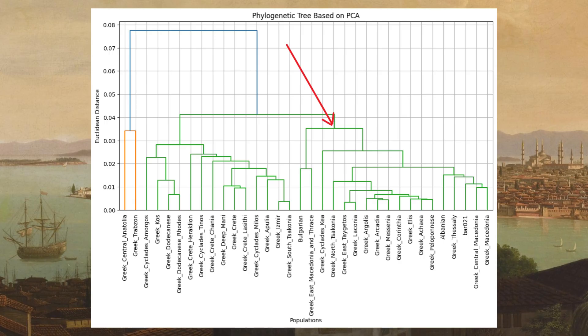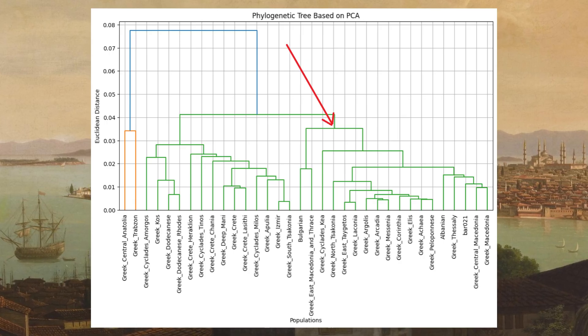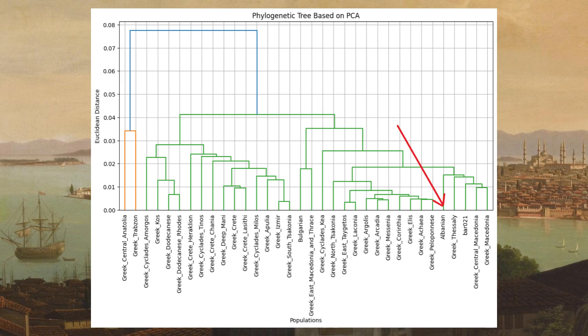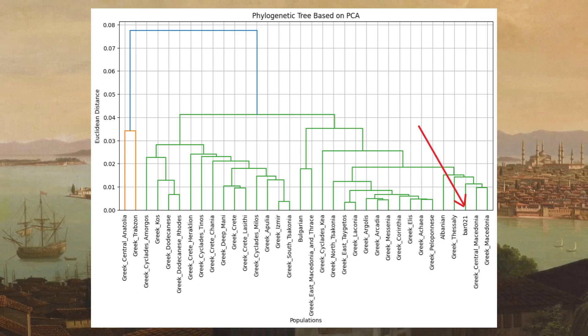There is also the Southern Balkan cluster, which is rather closely related to the Eastern Mediterranean one. In the Southern Balkan cluster, we find such ethnicities as Bulgarians, Albanians, Corinthian Greeks, and our Byzantine individual, Bar 021.